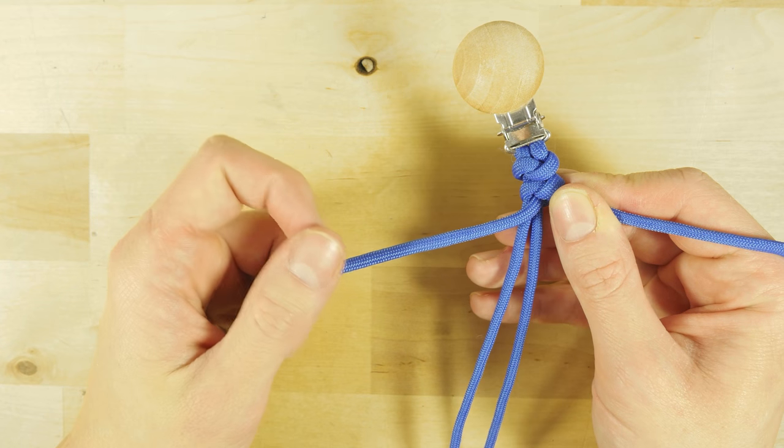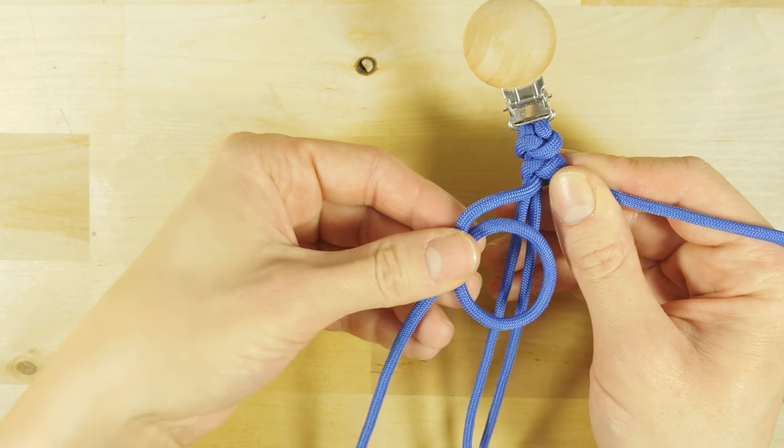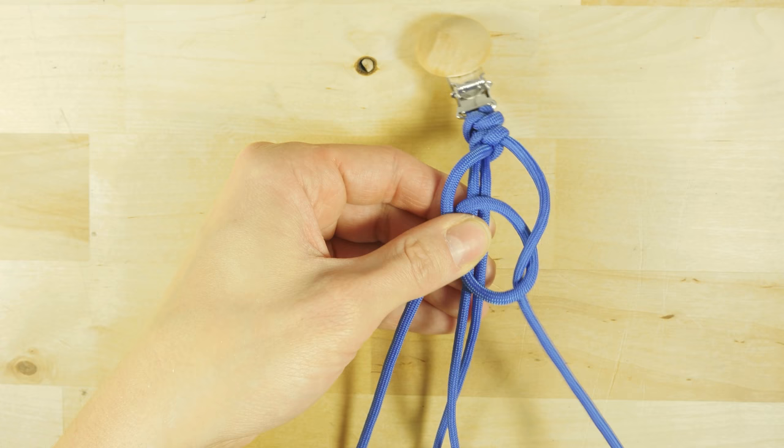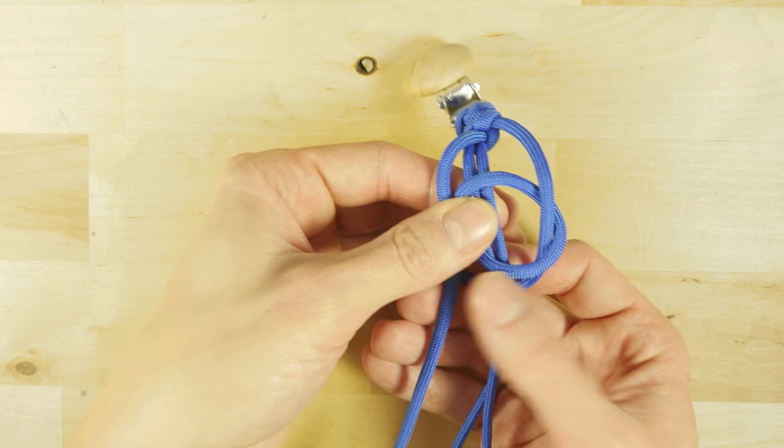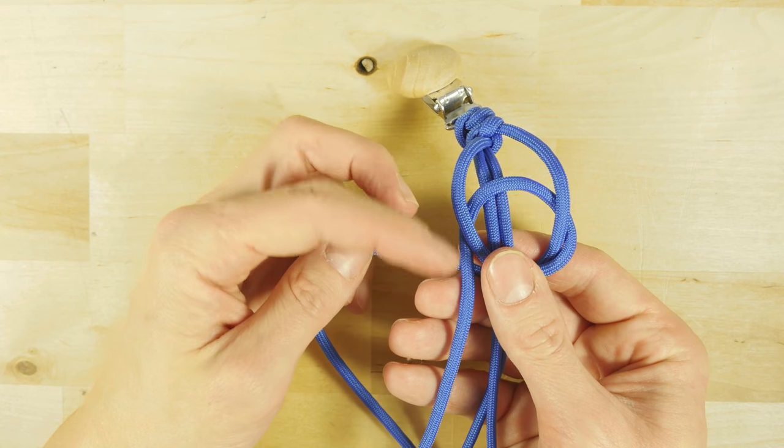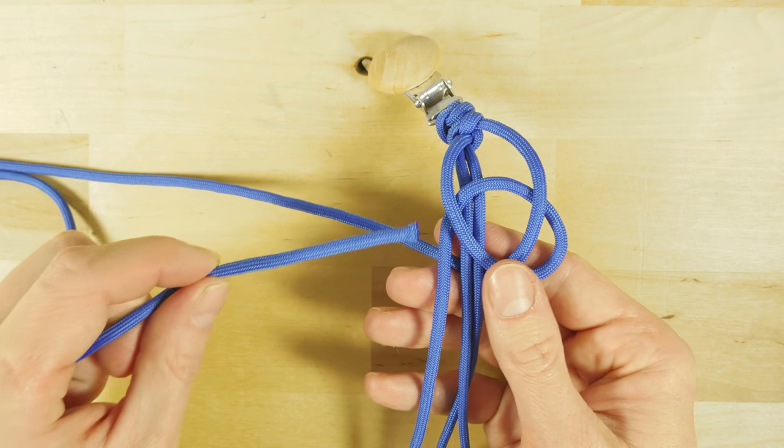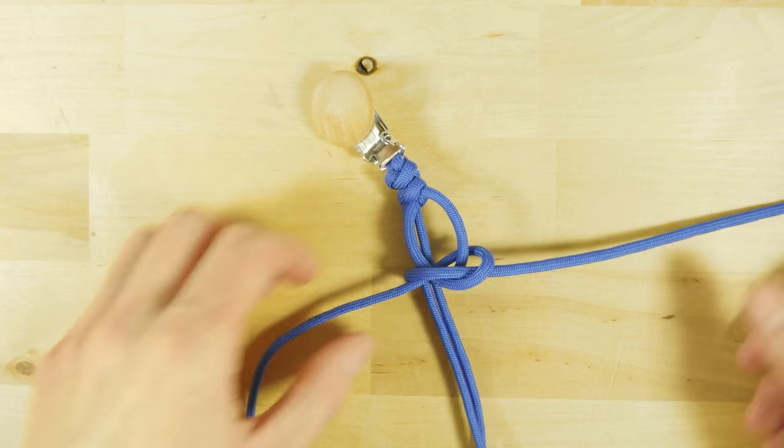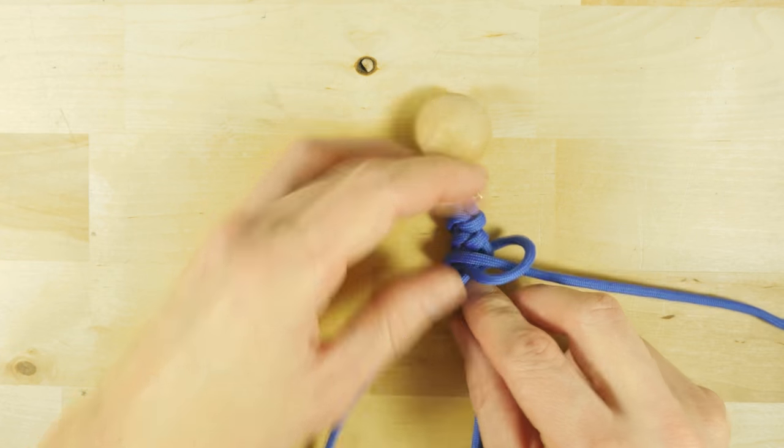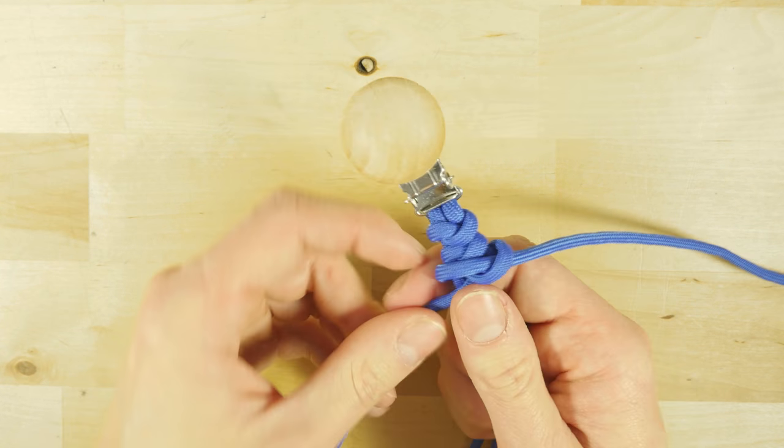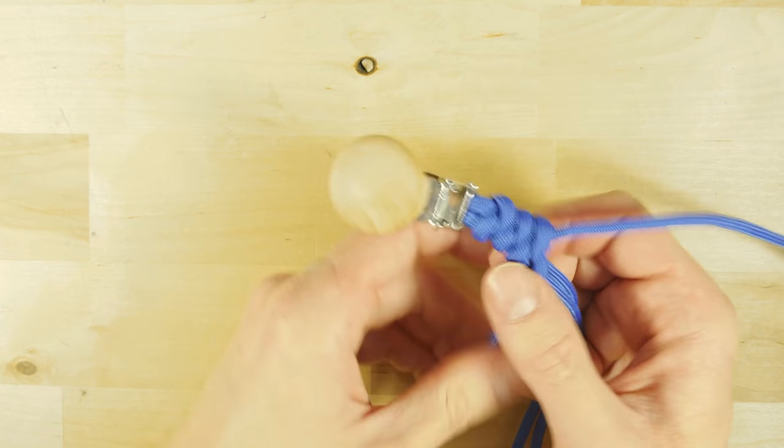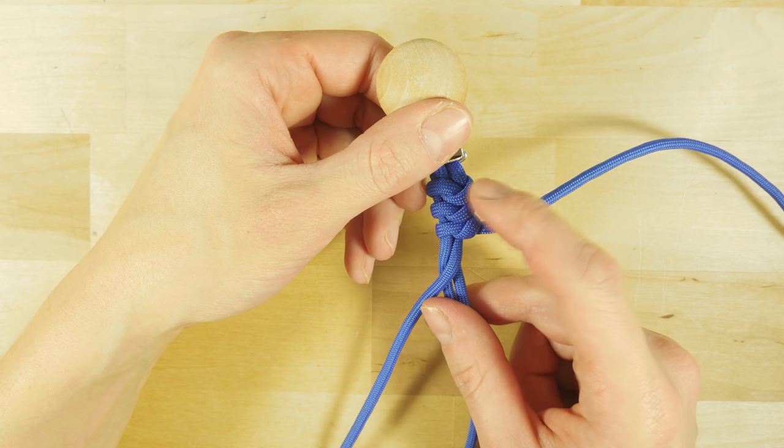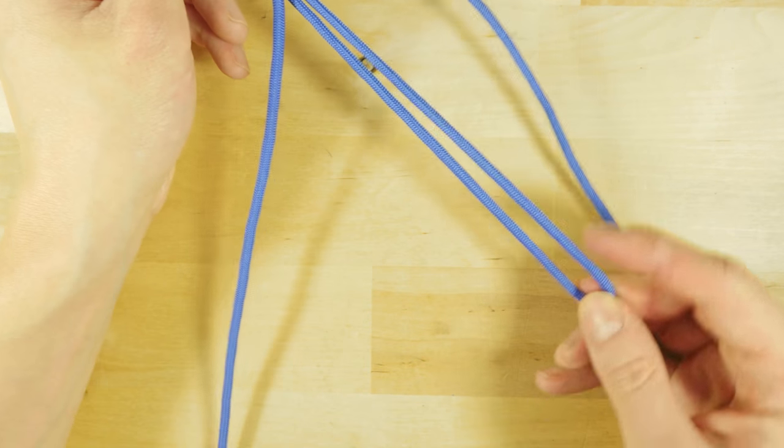Two knots done and a lot more to do. Let's do one more knot. Make a loop with the left strand. Take the right strand, travel top down through the loop. Then using the right strand, travel under the two middle strands as well as under the left one. Then travel over the top and into the loop on the right side. Then tighten up.